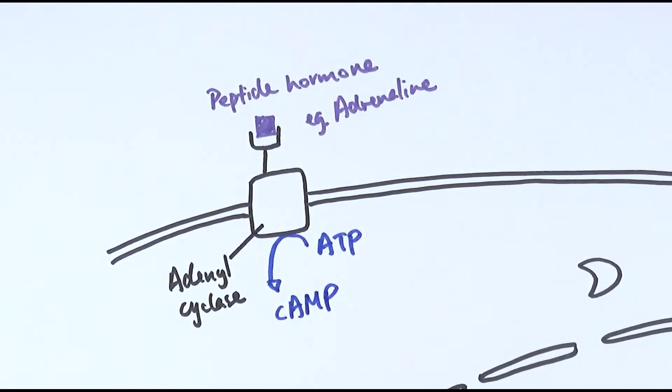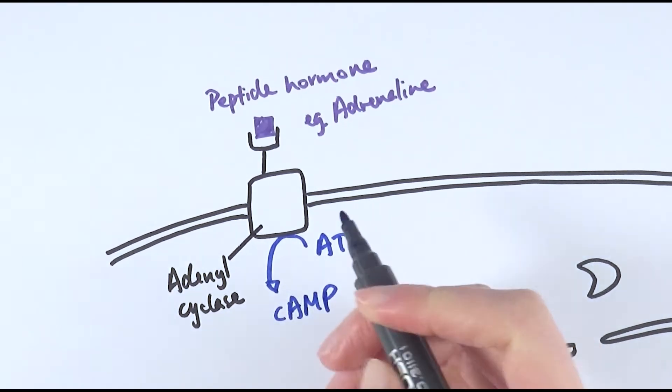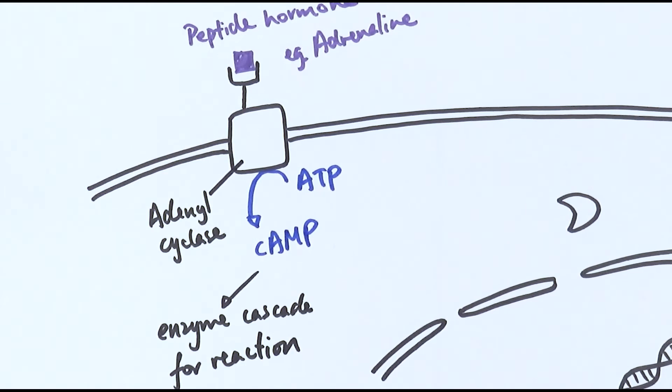For the binding of the hormone, it will activate the adenyl cyclase to turn ATP into cyclic AMP, which is what we call a second messenger. The cyclic AMP is then able to actually go and cause an enzyme cascade. An enzyme cascade refers to a series of different enzymes that are being activated one after the other.